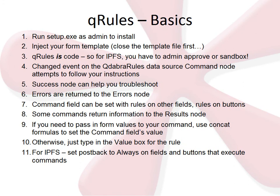The basic logic behind QRules is there's a change event on the command node that tries to do whatever you've told it to do — whatever text value you've passed into that command node, the code tries to act upon. There's a success node that can help you troubleshoot. If there are any errors, we return error messages to the errors node, so that node from the QRules data source can help you troubleshoot. You can also add sophisticated error handling by using that node.